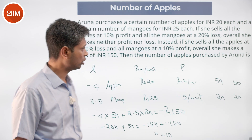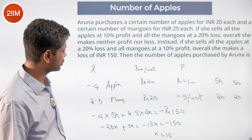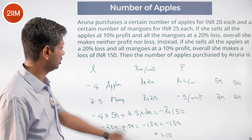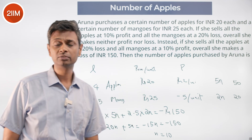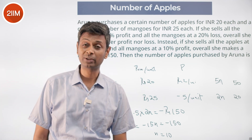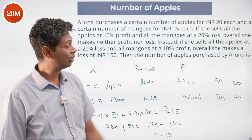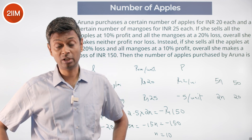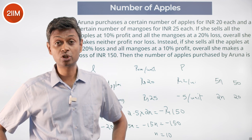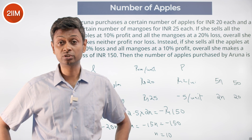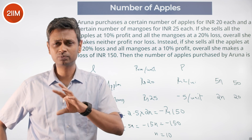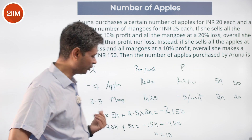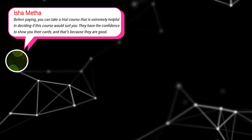The answer to the question — the number of apples purchased by Aruna — is 50, and she also bought 20 mangoes. The key insight is to use the first statement to find the ratio of apples to mangoes as 5 is to 2, express them as 5n and 2n, then plug into the second condition to solve for n.